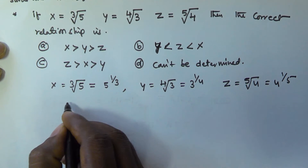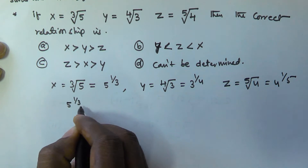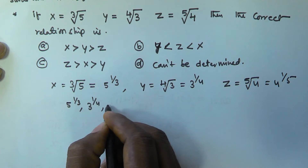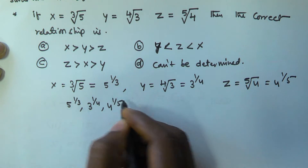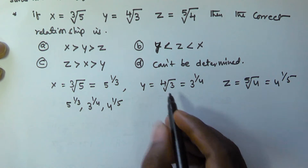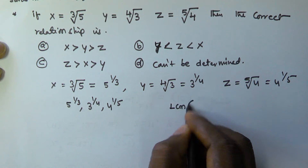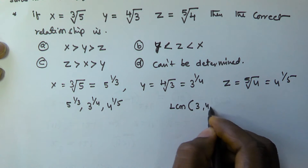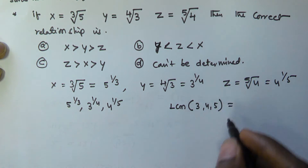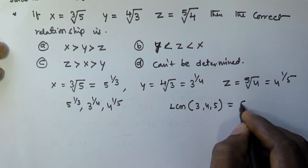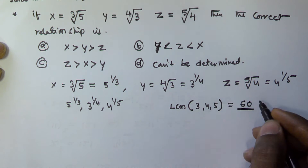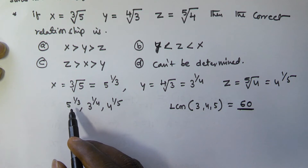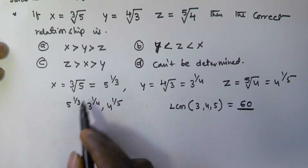So the given values are 5^(1/3), 3^(1/4), and 4^(1/5). Now we find the LCM of the denominators 3, 4, and 5. The LCM of 3, 4, and 5 is equal to 60.